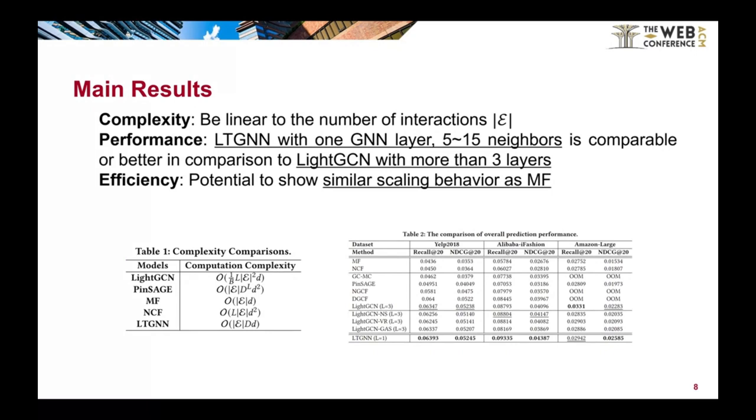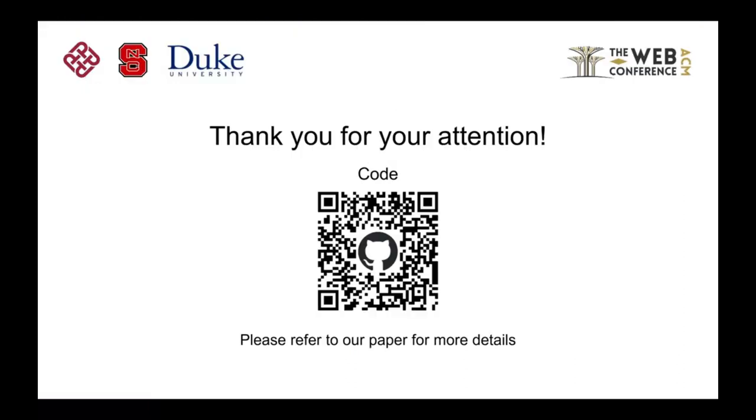For recommendation performance, our LTGNN can achieve similar or better results than LightGCN with more than three layers, with only one propagation layer and a few random neighbors. Our efficiency study shows that LTGNN has a similar scaling behavior as matrix factorization.